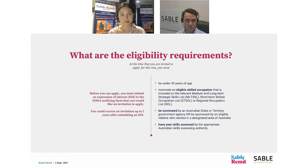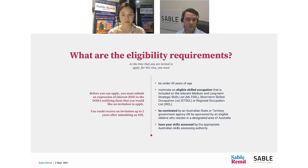This second dot point here on the right — being nominated by an Australian state or territory, or sponsored by an eligible relative — is a really important piece of the visa criteria which you need to understand. More than 90% of people who acquire a 491 visa have been nominated by an Australian state or territory government agency.